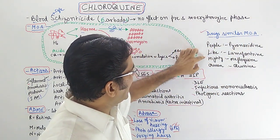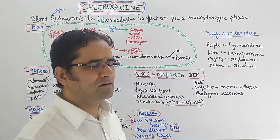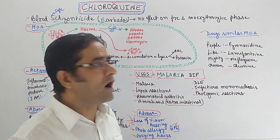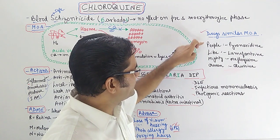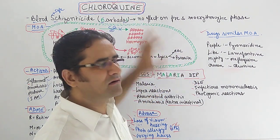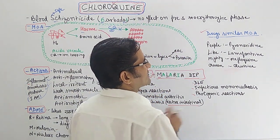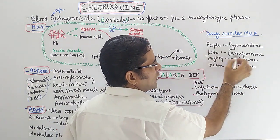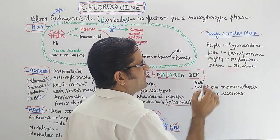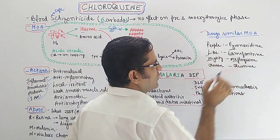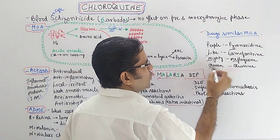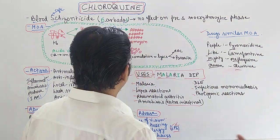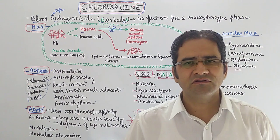The mnemonic is 'People Like Mighty Queen.' P stands for Pyronaridine, L stands for Lumefantrine, Mighty stands for Mefloquine, and Queen stands for Chloroquine itself. These drugs all have a similar mechanism of action to chloroquine.